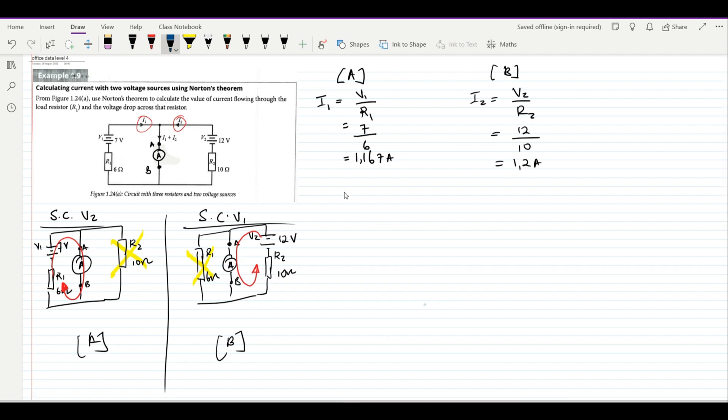This means that our Norton current in this case will be given by I1 plus I2, which is 1.167 plus 1.2 amps. Why are we adding this current? It's because both of these currents are moving towards the load resistor.